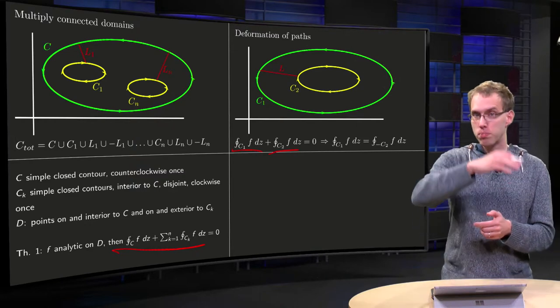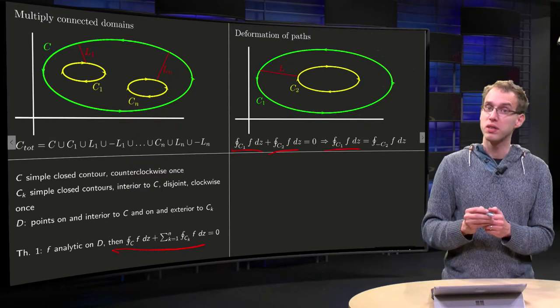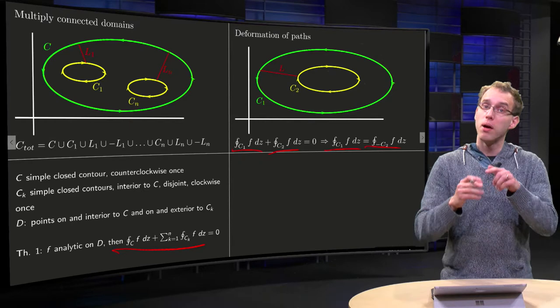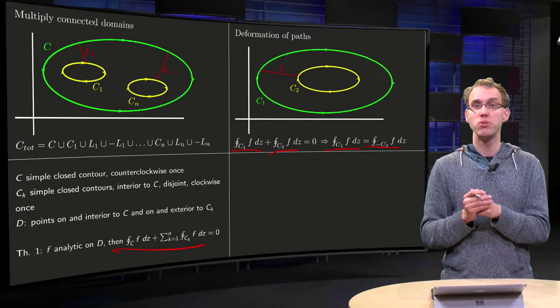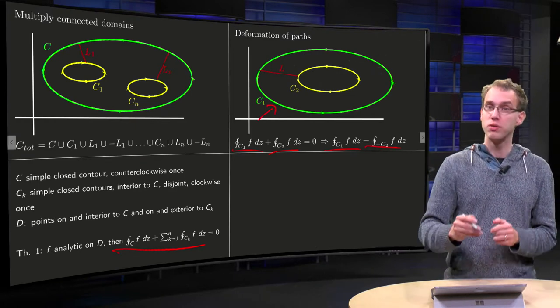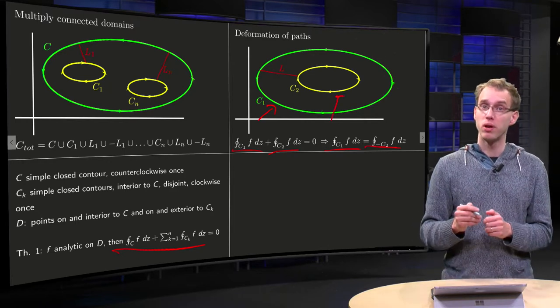But that means that you can put the integral along c2 to the other side. The integral along c1 counterclockwise equals the integral along minus c2. So c2 went clockwise, so the integral along minus c2 will be counterclockwise. So integral along c1 counterclockwise equals integral along c2 counterclockwise.